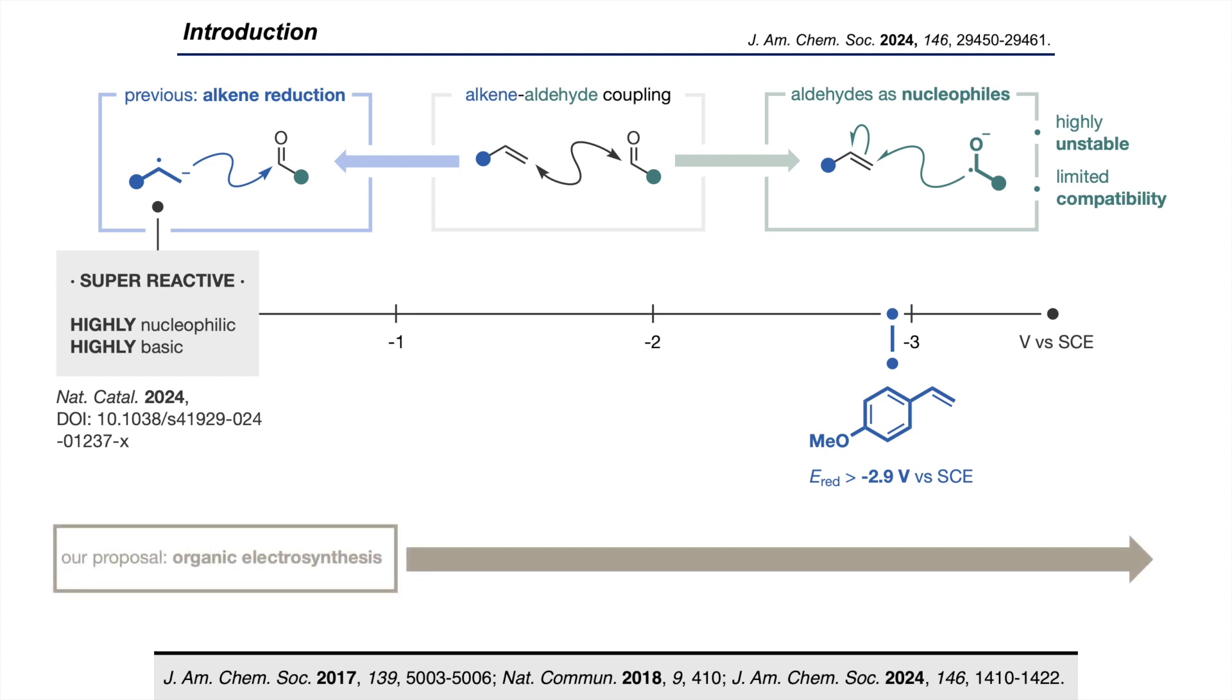We imagined that electrosynthesis may provide an ideal platform to achieve these reduction potentials. The great thing about electrochemistry is that the user defines the cell potential, and so this level of precision allows for an unmatched level of chemoselectivity. This proof of concept had already been demonstrated in the late 70s by Schaeffer and colleagues.